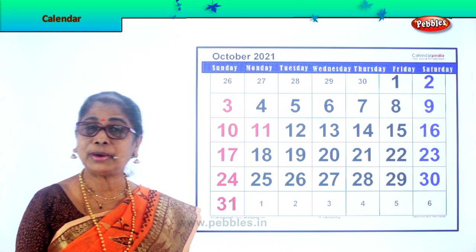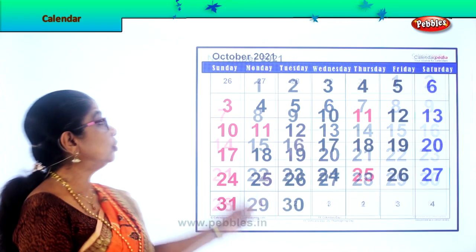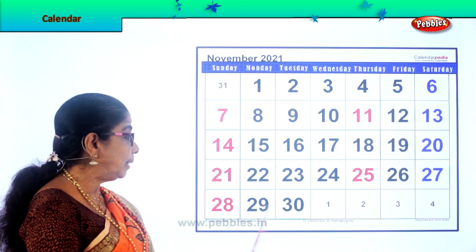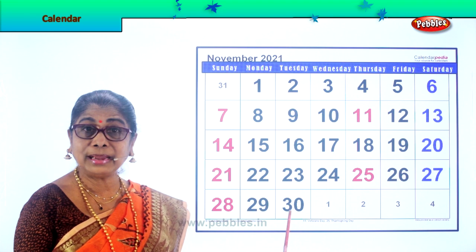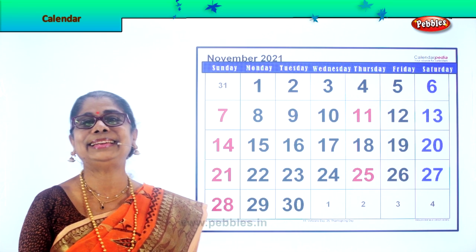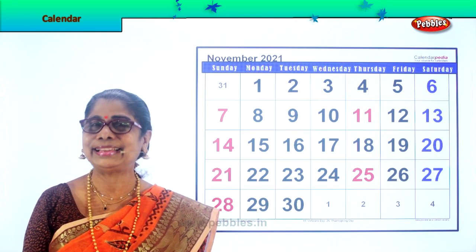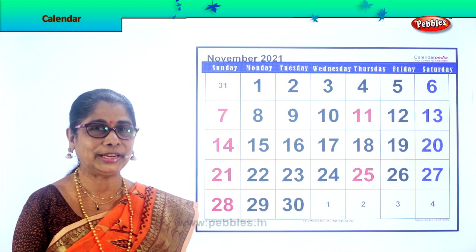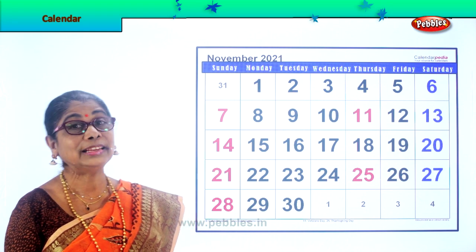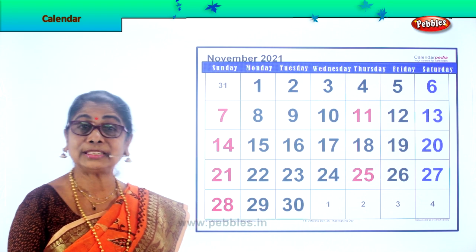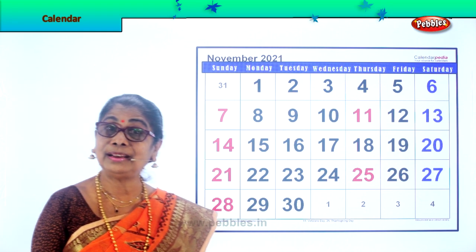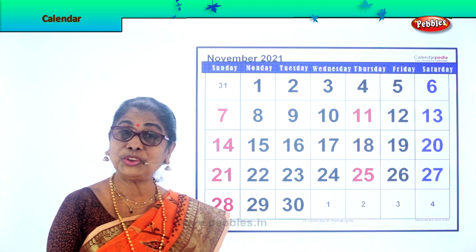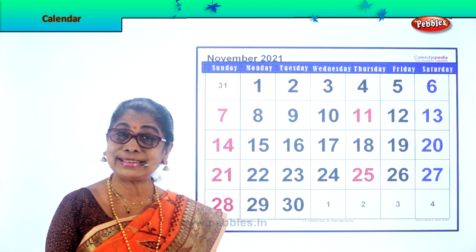After October, what follows? After October comes November. November has how many days? 30 days. All celebrations go on in November sometimes — the Diwali comes in the month of November and you are all excited.